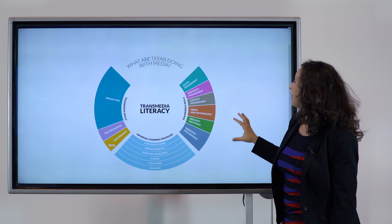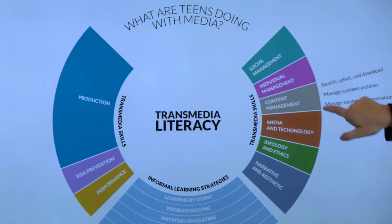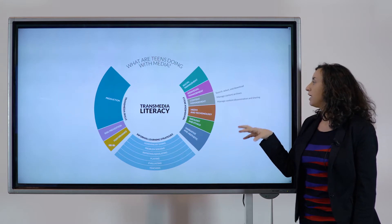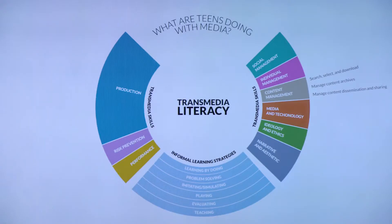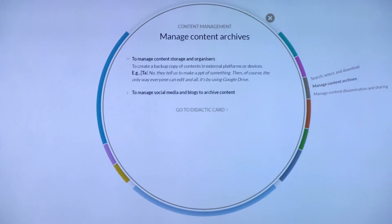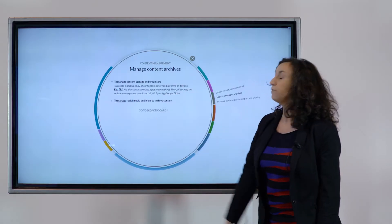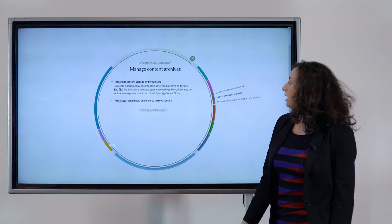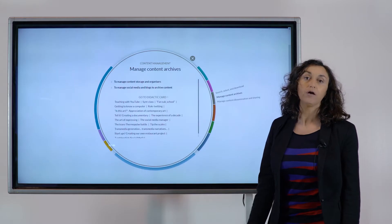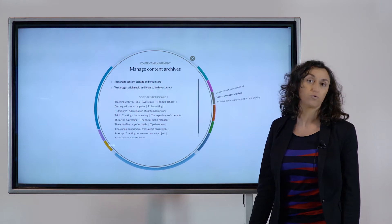These are the main areas, but if we select one of them we can observe specific subcategories and reach examples of these skills in teens. For example, if we select the sub-skill 'Manage Content Archives', we have a description of these skills with teens and most of all we can reach several didactic cards to organize activities in the classroom and merge this skill with formal outcomes and formal lessons in school.